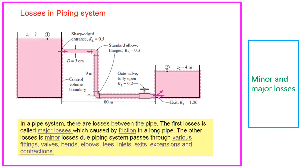So, what are losses in a piping system? In a piping system, there are losses between the pipes. The first type is called major losses, which is caused by friction in a long pipe. For example, here we have tank A and tank B. To move the fluid from tank A to tank B, we need a piping system. The losses caused by the fluid moving through a long pipe is what we call major losses.